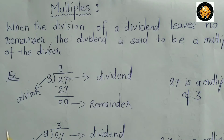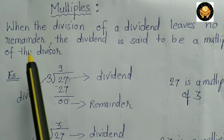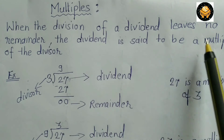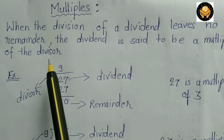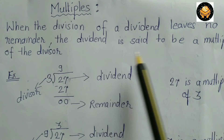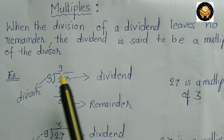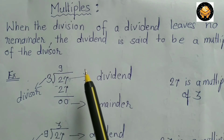Multiples. When the division of a dividend leaves no remainder, the dividend is said to be a multiple of the divisor.